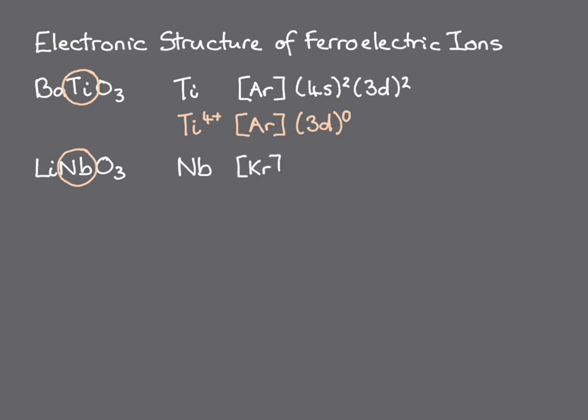As a second example, let's take lithium niobate. Here, niobium has electronic structure krypton 5s2 4d3, and so the formally 5+ niobium ion is again a d0 cation.